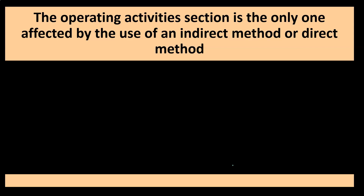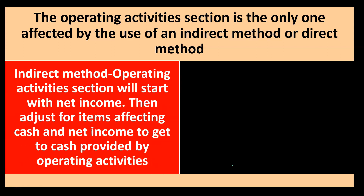When we think about the two methods — direct or indirect — it's the same process as for a single entity in that these two options only adjust the first section, which is the operating section, with no effect on the investing or financing sections. The indirect method operating activity section starts with net income, then adjusts for items affecting cash and net income to get to cash provided by operating activities. You're essentially starting from net income and backing into the cash from operations.